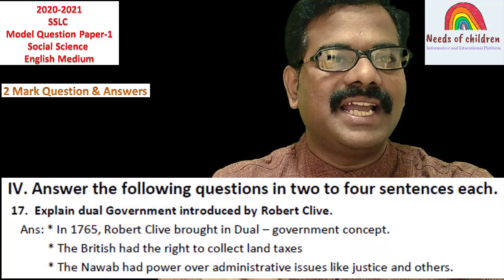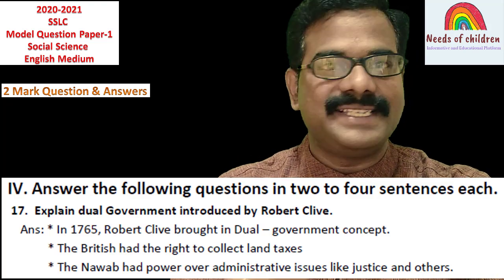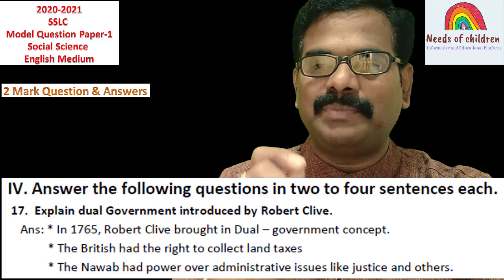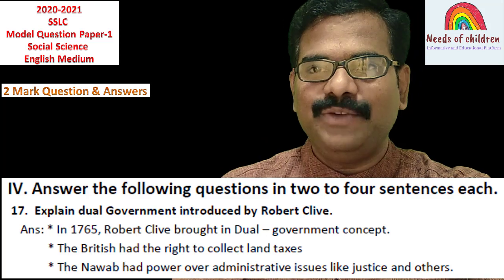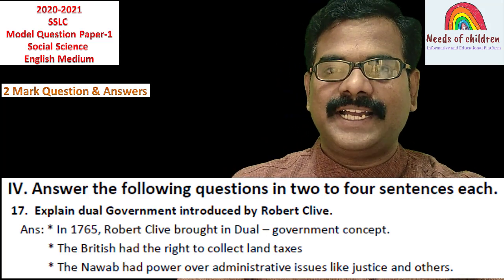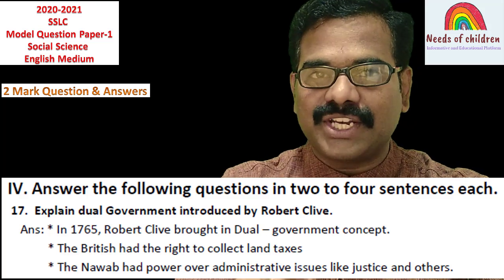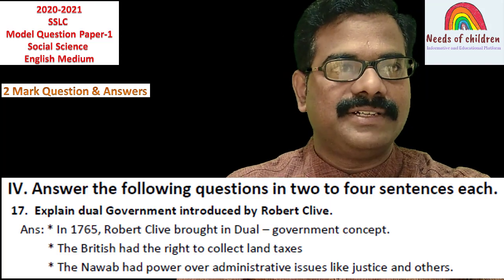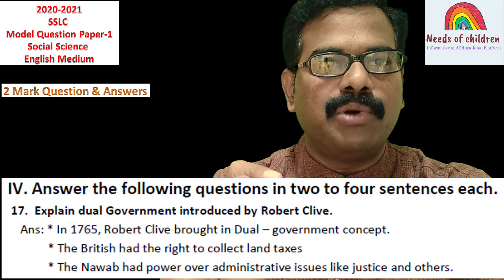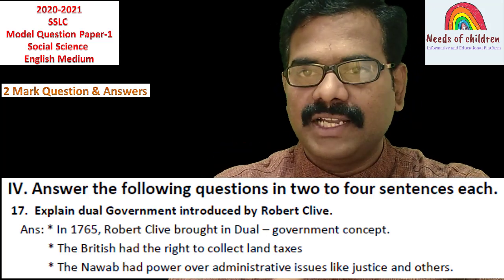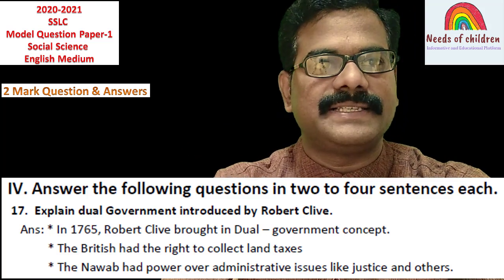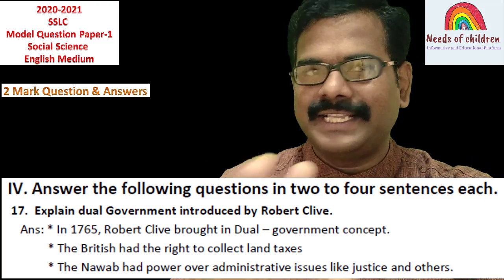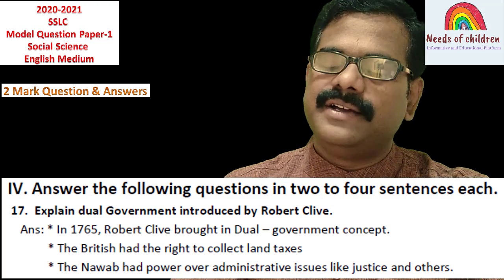Question number 17: Explain the Dual Government introduced by Robert Clive. This question is from History, Chapter Number 1 — Advent of Europeans to India. The answer is: In 1765, Robert Clive brought in the Dual Government concept. The British had the right to collect land taxes, while the Nawab had power over administrative issues like justice and others.